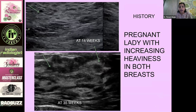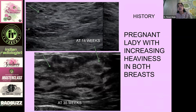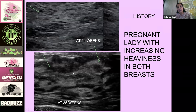This is a pregnant lady with increasing heaviness in both breasts. This is her breast at 14 weeks at the end of the first trimester, and this is at 35 weeks. We see that the glandular component in the breast has increased, and there is a little bit of ductal prominence coming about, as we would observe with ductal sprouting, which starts around the first trimester.